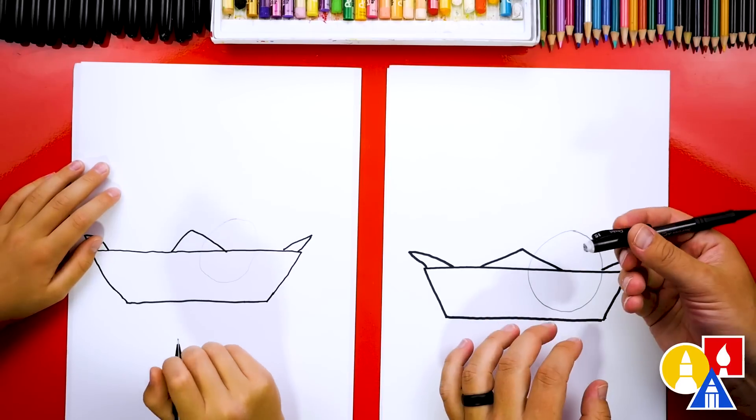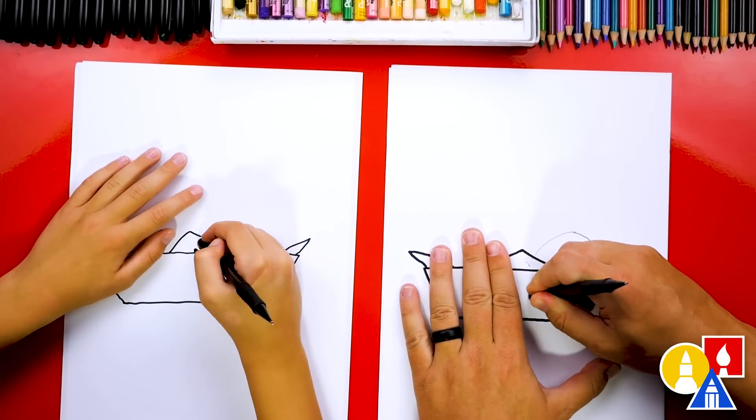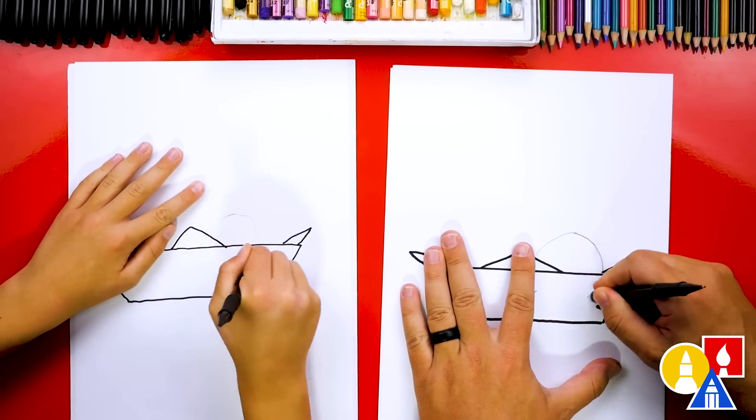Now that we have that circle shape, let's switch to our eraser. And we're going to erase the line that's inside of the boat or the tray.